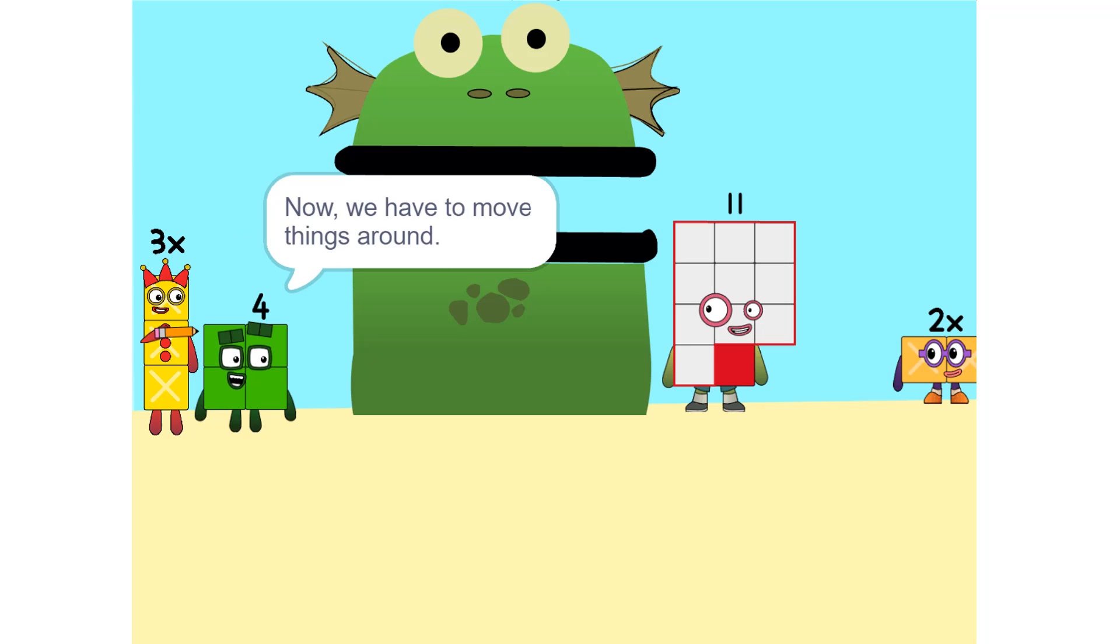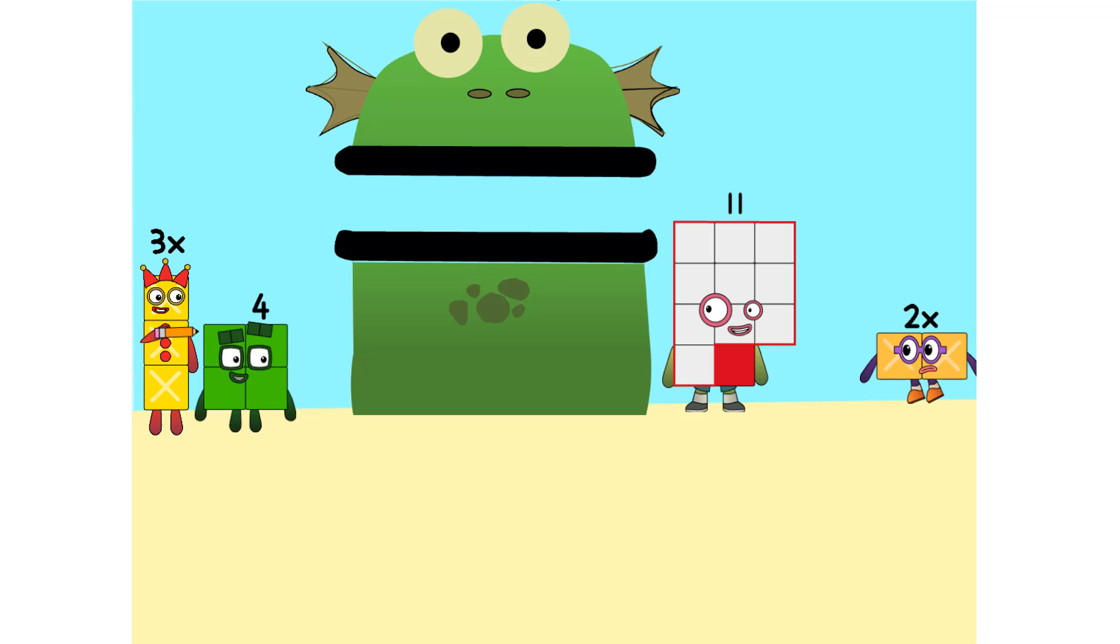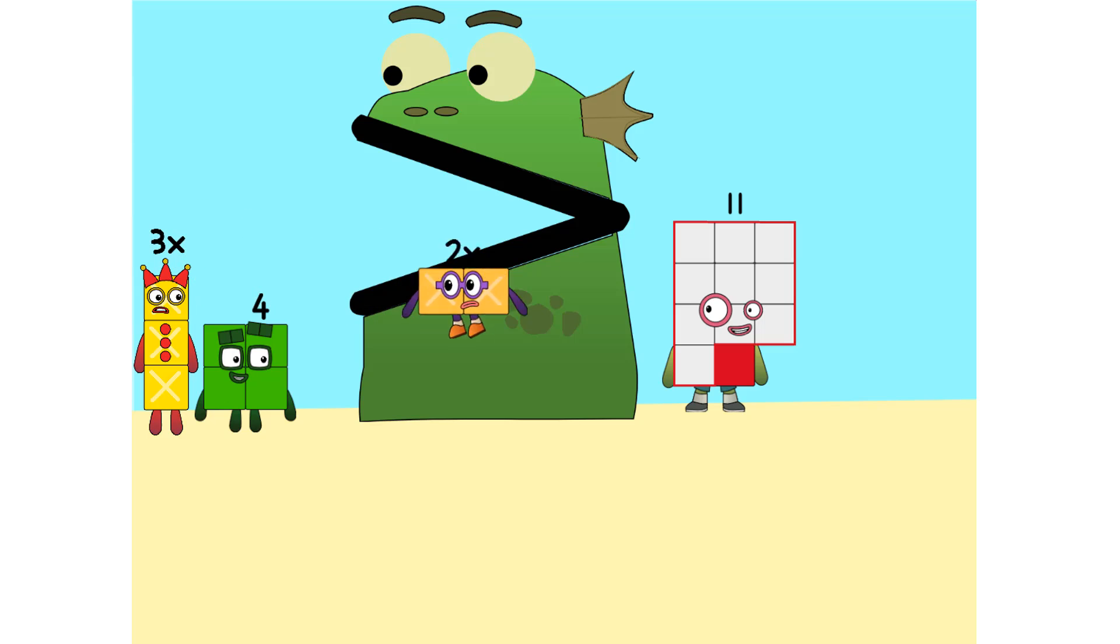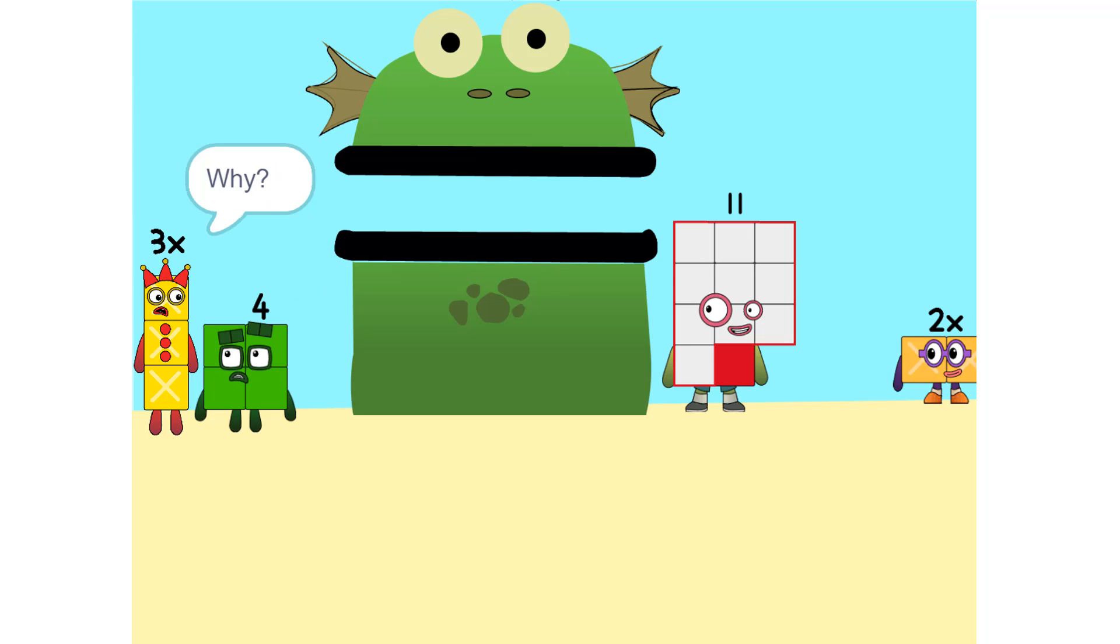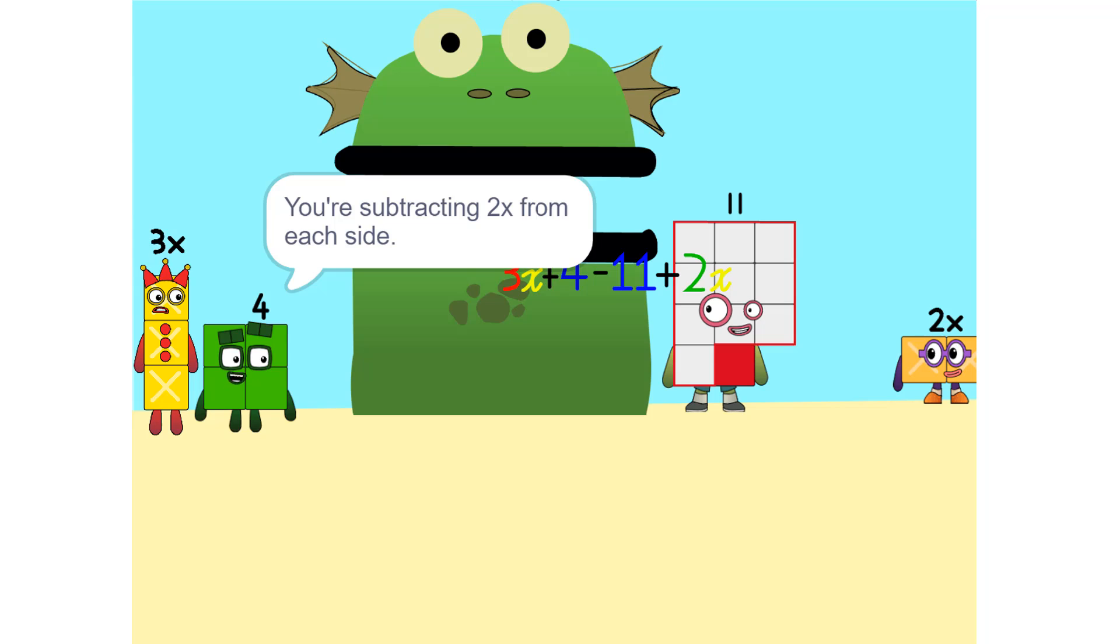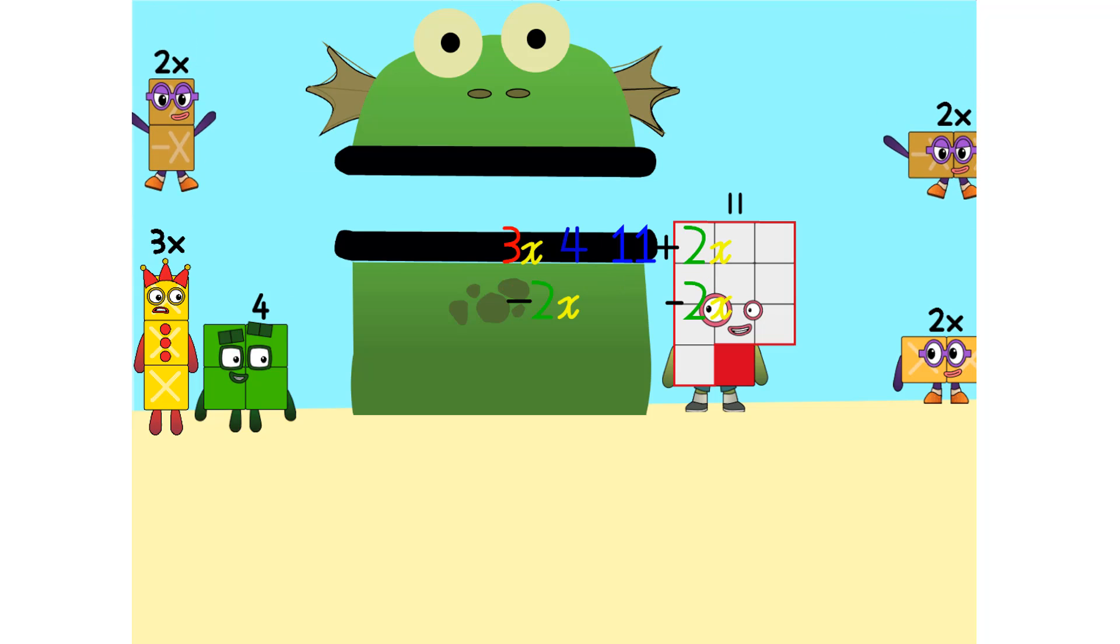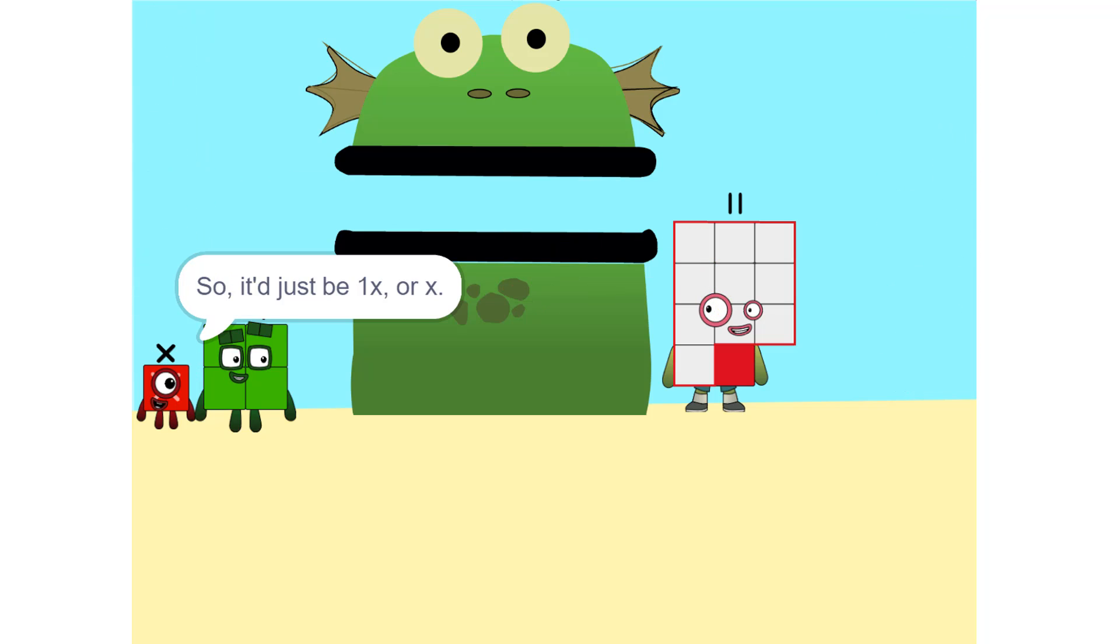Yeah. Now we have to move things around. We have to move this 2x to this side. Whenever you switch sides, you have to switch its sign. So if it's positive, it becomes negative and vice versa. Why? Think of it this way. You're subtracting 2x from each side. Oh. So it just be 1x or x. Correct.